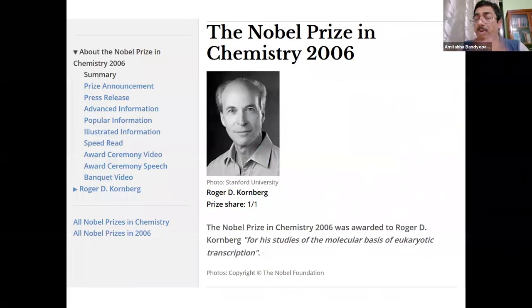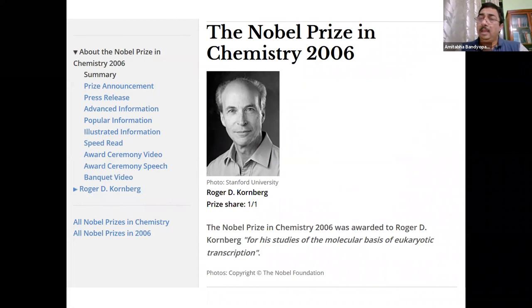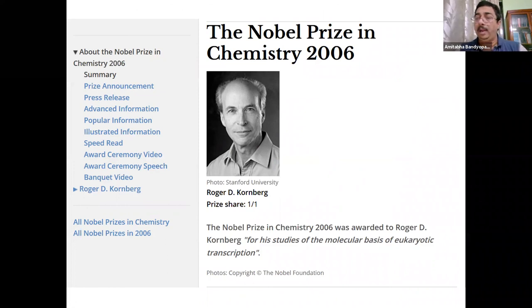For all this work, Roger Kornberg received his Nobel Prize in 2006. His father received it earlier for DNA polymerization; his son received it for RNA polymerization.